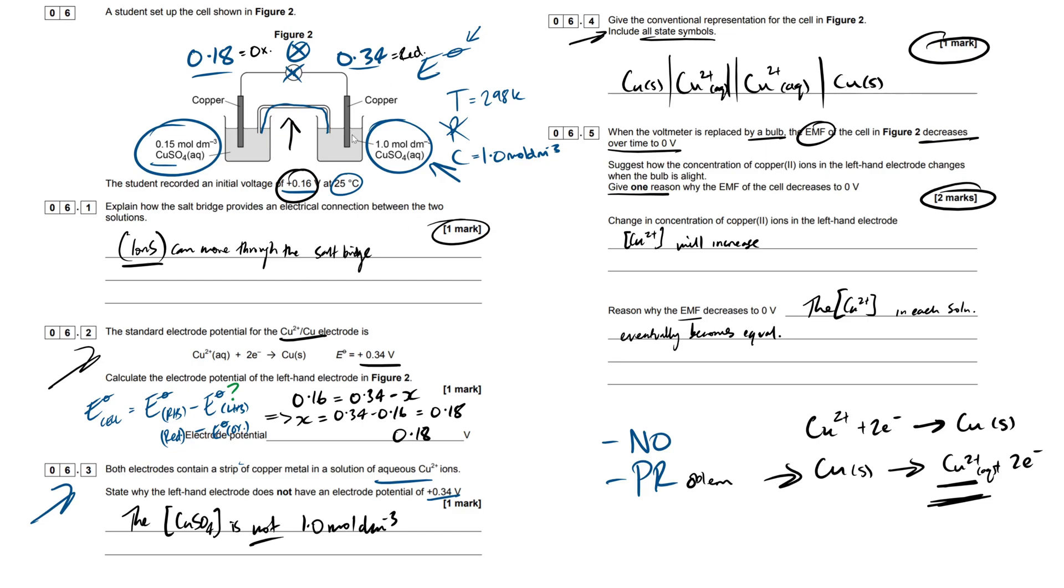Also, you could think about it via diffusion, because this is a salt bridge which is going to allow the flow of ions through. This has a lower concentration, this has a higher concentration, therefore there's going to be a natural diffusion for these ions to move to a state of lower concentration here. So that could be an alternative way of looking at it, a bit of biology knowledge in there.